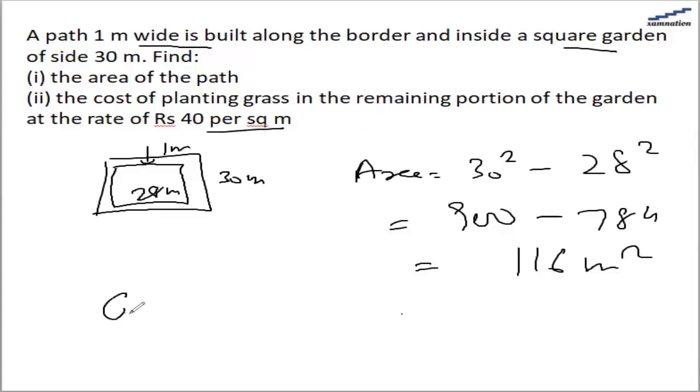So the cost of planting grass will be the area of the remaining portion of the garden, and the cost of planting per square meter will be 40 rupees. So this will be 31,360 rupees.